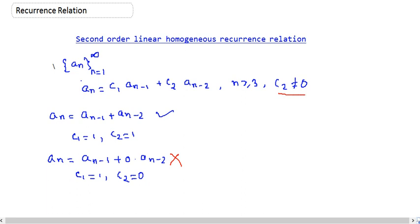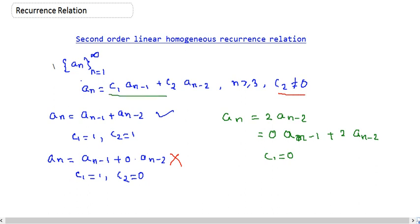So is a_n equals 2 times a_{n-2} a second order linear homogeneous equation? We can write it as 0 times a_{n-1} plus 2 times a_{n-2}. So c1 is 0 and c2 is 2, which is non-zero. So this is in the required form and this is indeed an example of a second order linear homogeneous equation.